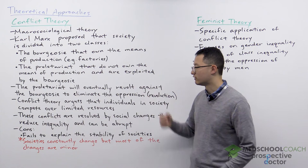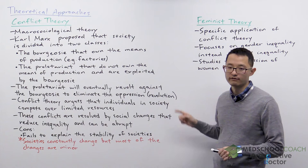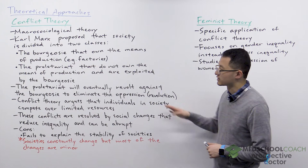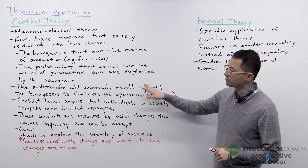Karl Marx essentially had this idea that the proletariat will eventually revolt against the bourgeoisie to eliminate the oppression. This was seen as revolutions, and at the time there were a number of revolutions going on, so there was considerable support for Karl Marx's theories.